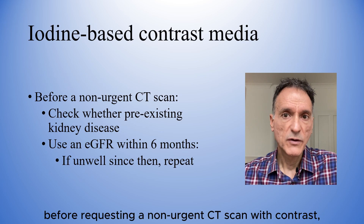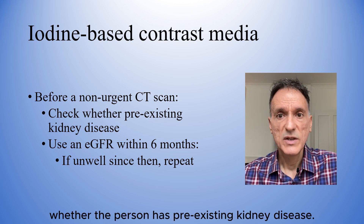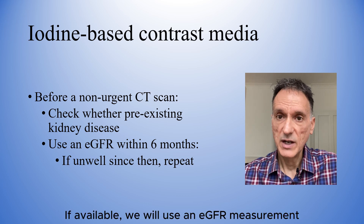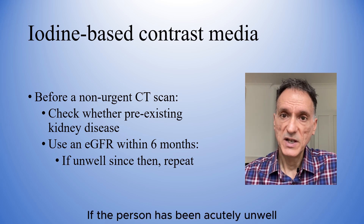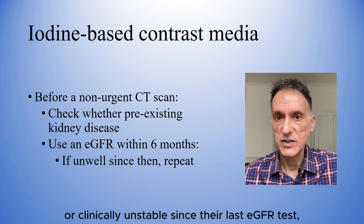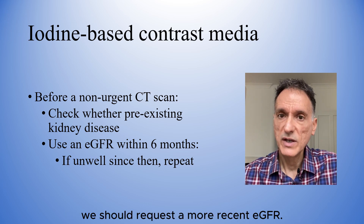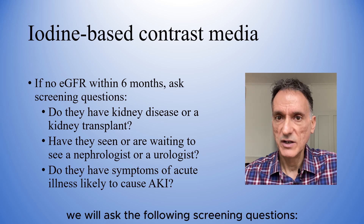Before requesting a non-urgent CT scan with contrast, we should assess whether the person has pre-existing kidney disease. If available, we will use an EGFR measurement from the past six months. If the person has been acutely unwell or clinically unstable since their last EGFR test, we should request a more recent EGFR. If no EGFR is available from the past six months, we will ask the following screening questions.